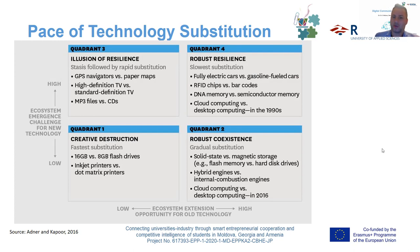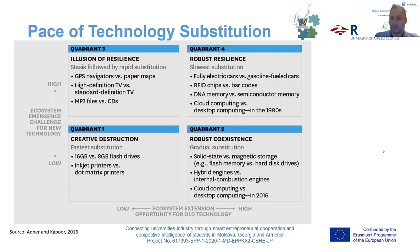In quadrant two, the model describes 'robust coexistence,' where gradual substitution took place. Good examples include solid state versus magnetic storage — such as flash memory or USB drives versus hard disk drives in personal computers — hybrid engines versus internal combustion engines, and cloud computing versus desktop computing, which changed significantly around 2016.